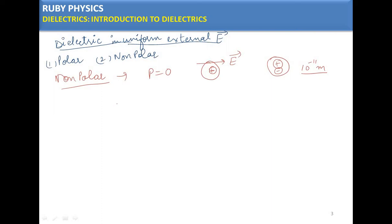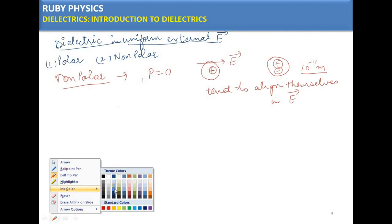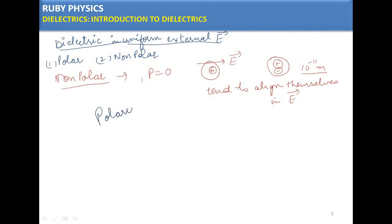All the dielectric molecules now have a dipole moment, represented by P, and all these dipoles tend to align themselves in the direction of the electric field. This effect — the displacement of positive and negative charges and their alignment in the electric field — is known as polarization of the dielectric.